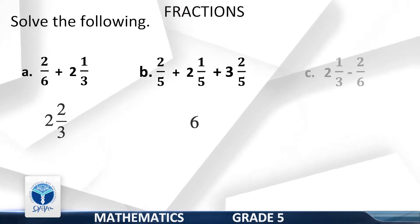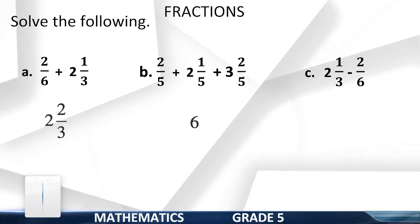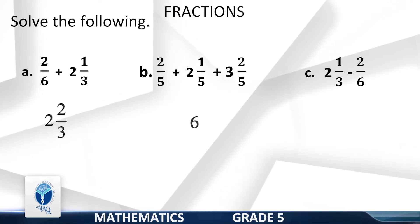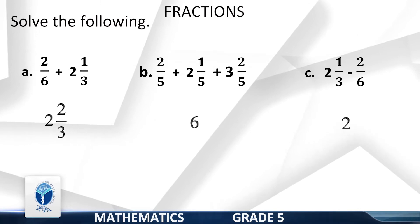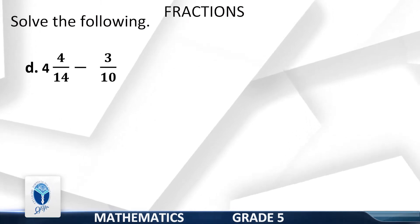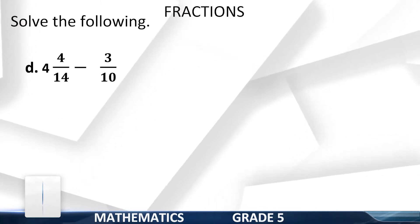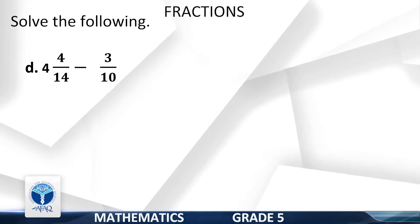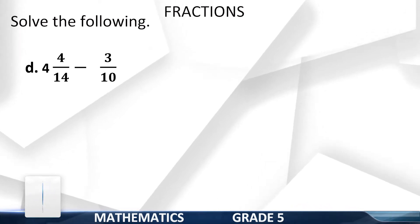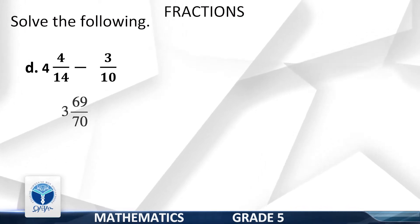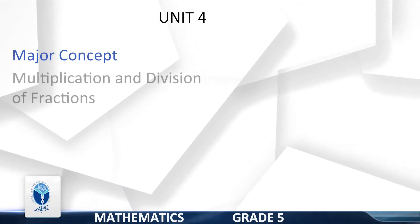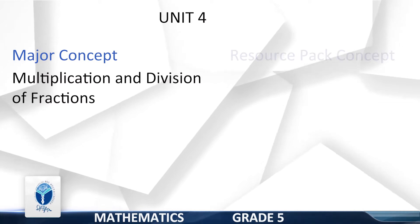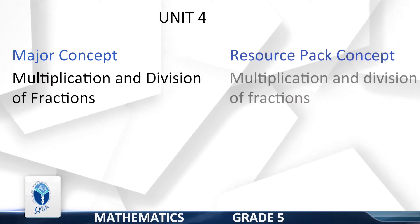C: 2 whole 1/3 plus 2/6. Yes, your answer is 7/9. D: 4 whole 4/40 minus 3/10. Yes, your answer is 3 whole 59/70.